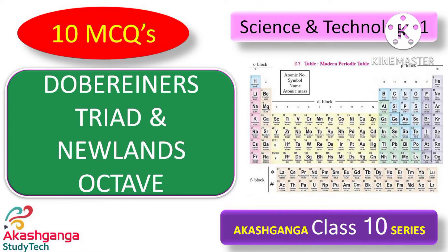Jaishin. In this video we will study 10 MCQs based on the topic Dobereiner's Triad and Newlands Octave of the chapter Periodic Classification of Elements, Science and Technology 1, Standard 10. Answers will be supplied at the end of this video.